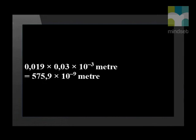You should get the answer 575.9 times 10 to the minus 9 meters. The wavelength of visible light is usually given in nanometers. One nanometer is 10 to the minus 9, so the wavelength of this yellow light is 575.9 nanometers.